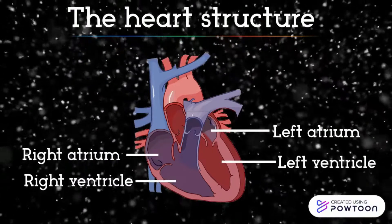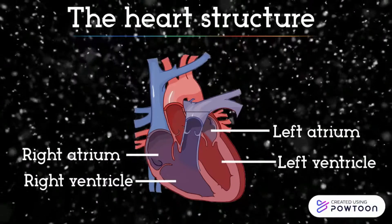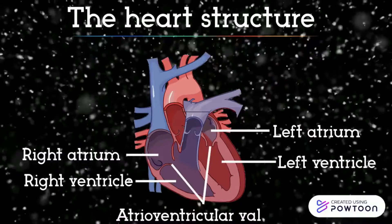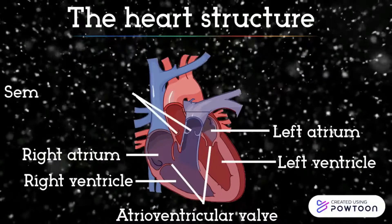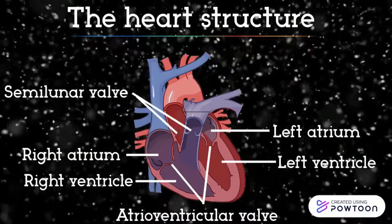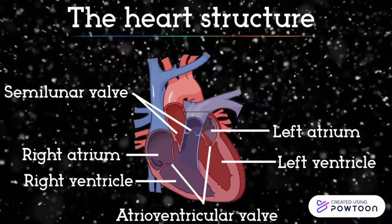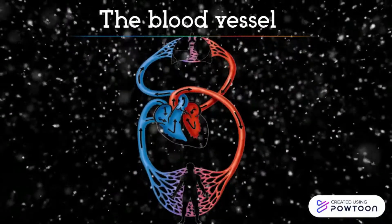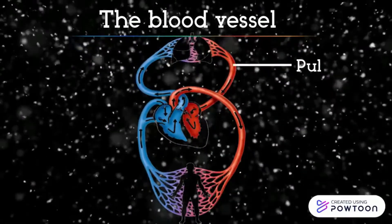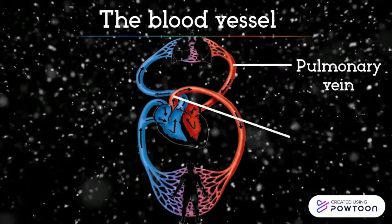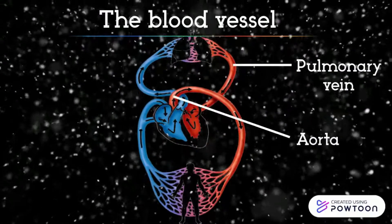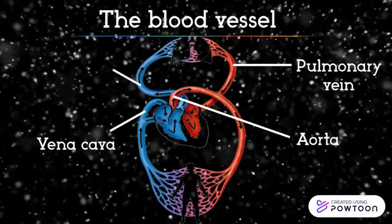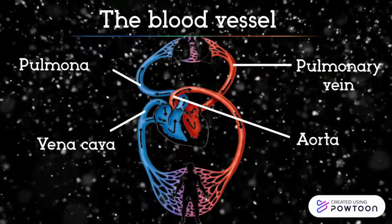The heart also has two types of valves: the atrioventricular valve and the semilunar valve. Blood vessels consist of the pulmonary vein, aorta, vena cava, and pulmonary artery.